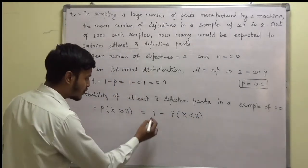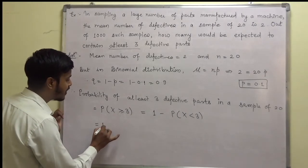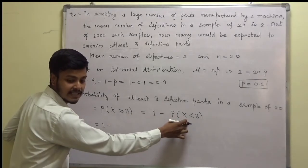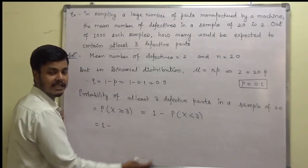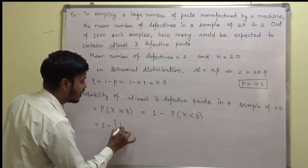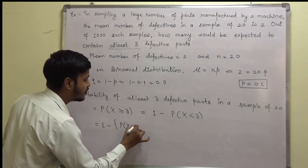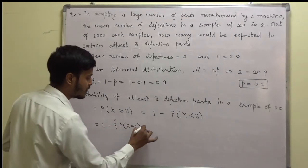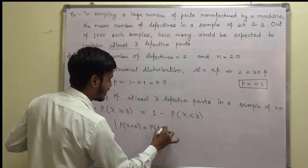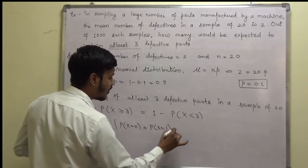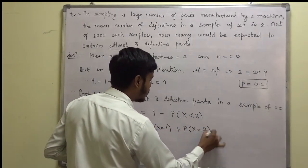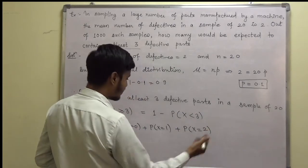So this can be written as 1 minus the sum of probability of x equals 0, probability of x equals 1, and probability of x equals 2.